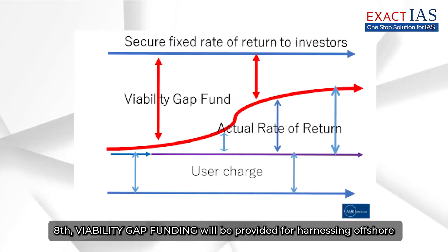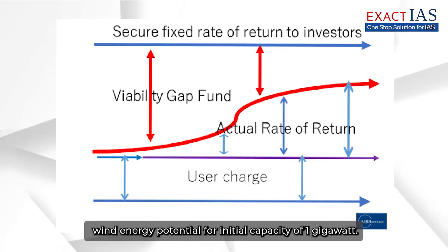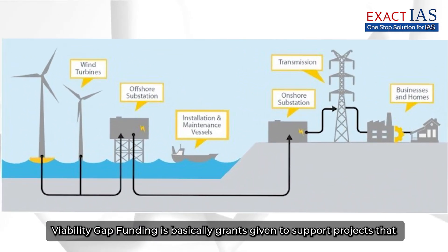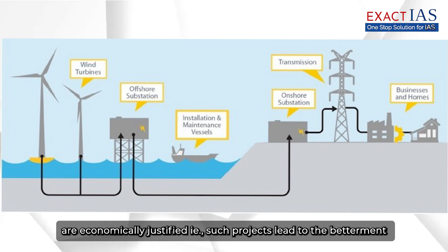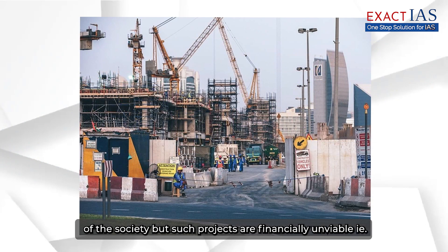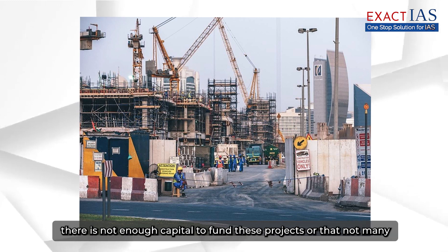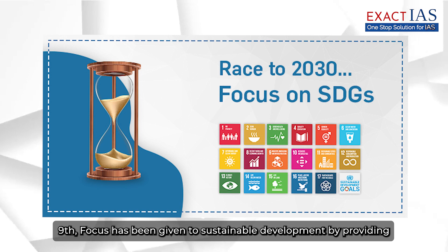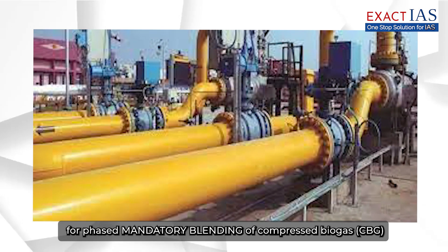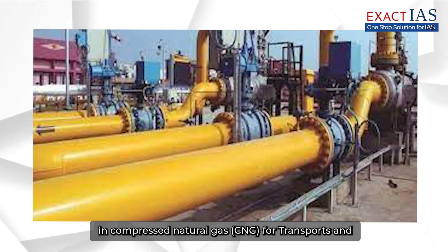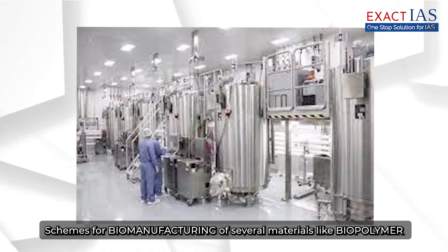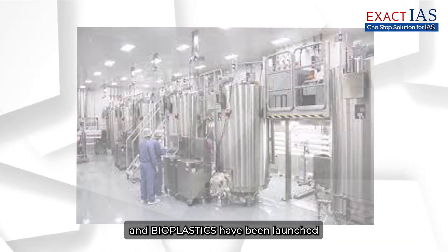Eighth, viability gap funding will be provided for harnessing offshore wind energy potential for an initial capacity of one gigawatt. Viability gap funding is basically grants given to support projects that are economically justified — i.e., they lead to the betterment of society — but are financially unviable, meaning there is not enough capital or not many investors for such risky long-term projects. Ninth, focus has been given to sustainable development by providing for phased mandatory blending of compressed biogas in compressed natural gas for transport and piped natural gas for domestic purposes. Schemes for biomanufacturing of materials like biopolymer and bioplastics have also been launched.